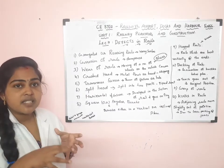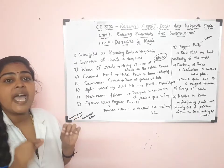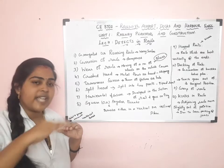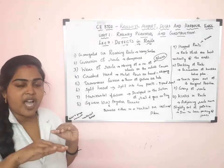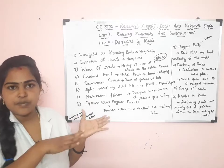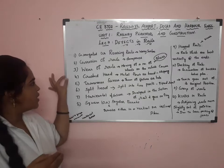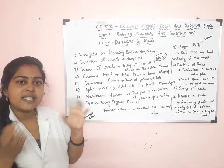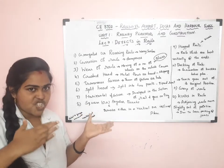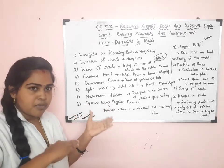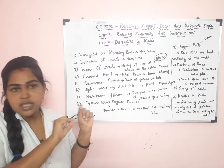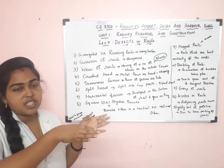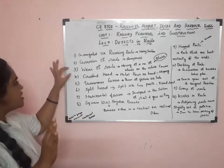Wear of rails at ends is due to the expansion gap. When the train moves on that expansion gap, due to the impact load produced by the train on the rails, the rails get worn. The next classification is wear of rails at sides. At sides, when the train moves on a curve, centrifugal forces develop on the vehicle. Due to these centrifugal forces, the side of the rail gets worn.